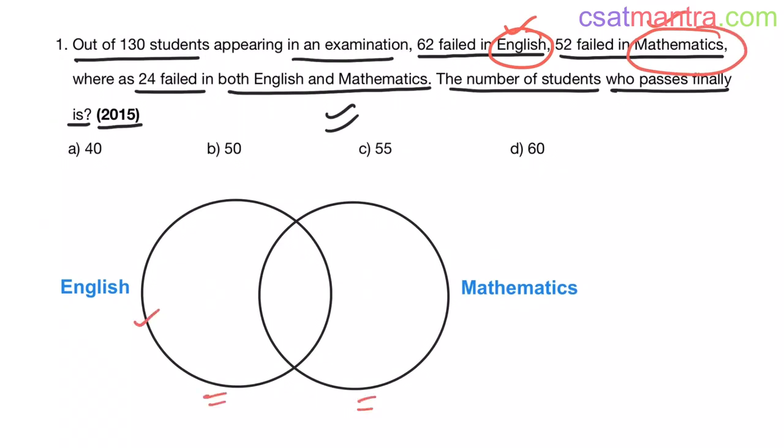This is for English, this is for Mathematics. This area is those who only failed in English. This area is those who failed only in Mathematics. This area is those who failed in both English and Mathematics. So we have 24 people who failed in both English and Mathematics. So this is 24.